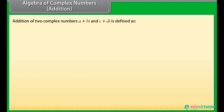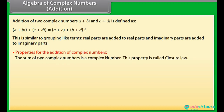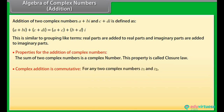Algebra of complex numbers — Addition. Addition of two complex numbers A plus B iota and C plus D iota is defined as: (A plus B iota) plus (C plus D iota) is equal to (A plus C) plus (B plus D) iota. This is similar to grouping like terms — real parts are added to real parts, and imaginary parts are added to imaginary parts. The sum of two complex numbers is a complex number; this property is called the closure law. Complex addition is commutative: for any two complex numbers Z1 and Z2, Z1 plus Z2 equals Z2 plus Z1.